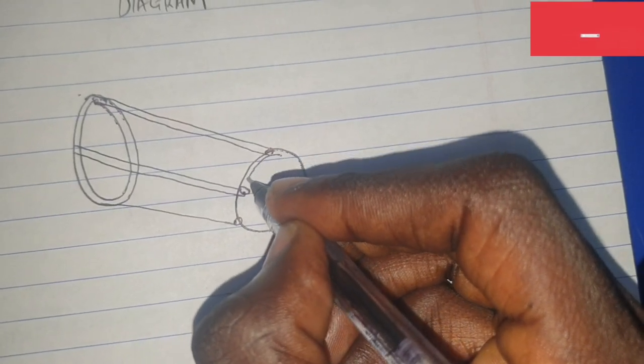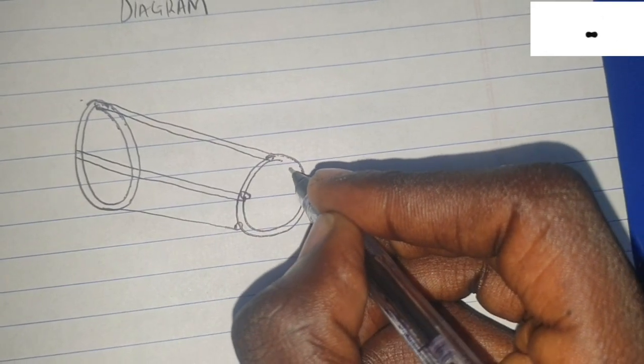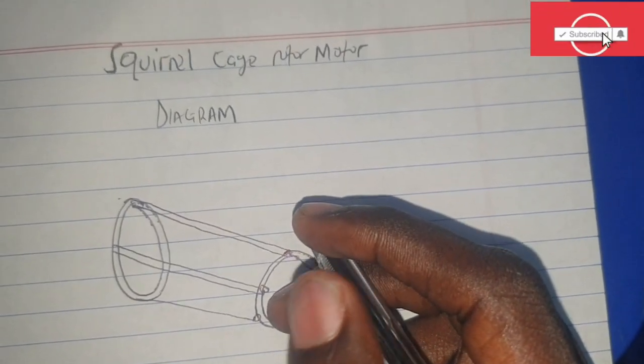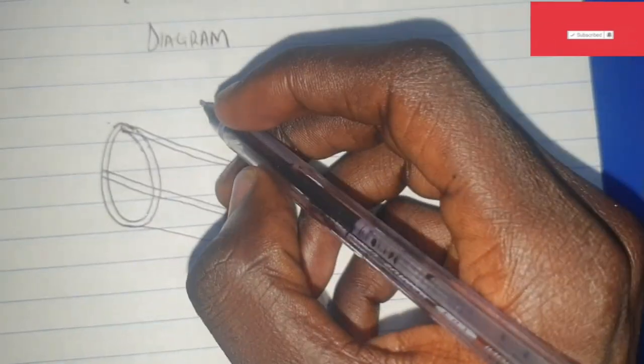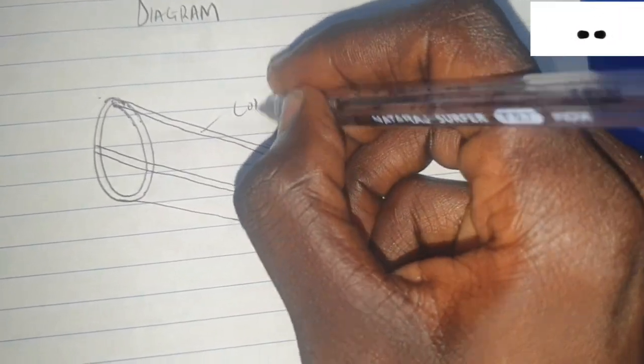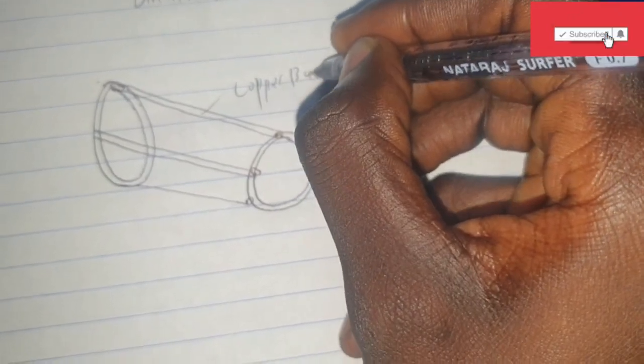So this side is also an end ring. As you can see here, this is our end ring. These are copper bars, so now these are copper bars. Label it.